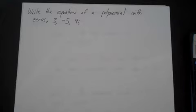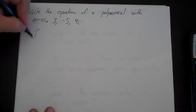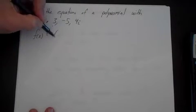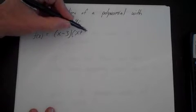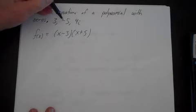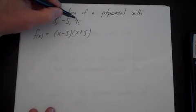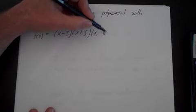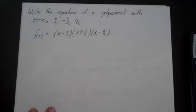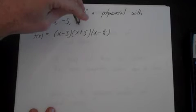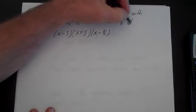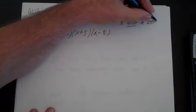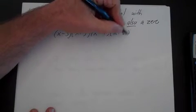Let's do another problem: write the equation of a polynomial with the following zeros — 3, -5, and 4i. f(x) equals (x - 3), since 3 is a zero. Times (x + 5), since -5 is a zero. Times (x - 4i) for the zero 4i. But we also know that if 4i is a zero, then -4i must also be a zero, so (x + 4i) is also a factor.